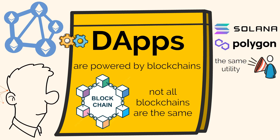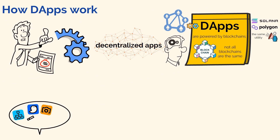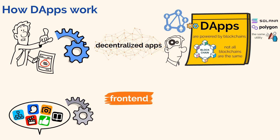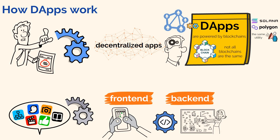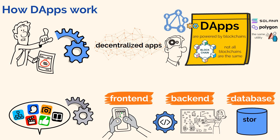To better understand how dApps work, let me first briefly explain how traditional centralized apps work. So there are three key aspects of a normal app. The first is called the front-end — this is basically the user interface that allows you to interact with the app. The second aspect is the back-end, which refers to the code and logic that determines how the app executes commands. And thirdly, traditional centralized apps will often be built on a database. The database helps to store data that makes the logic of the app work.